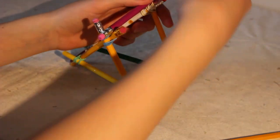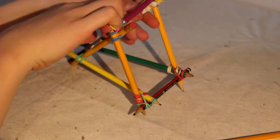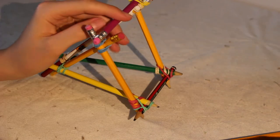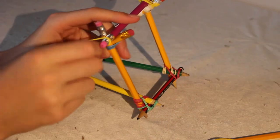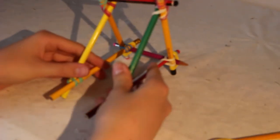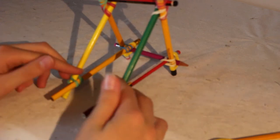So now we're going to attach the back in exactly the same way as we did before. Just taking one of the pencils, wrap it round. And the same on the other side. There we go.